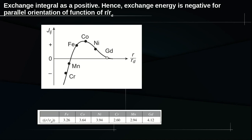In all other atoms — such as chromium and manganese — the value of J_ij is a negative quantity and does not produce ferromagnetic behavior. This table gives the values of the ratio R/R_D. Due to the exchange interaction, ferromagnetic materials possess spontaneous magnetization.